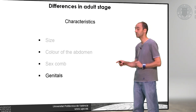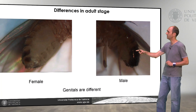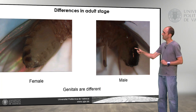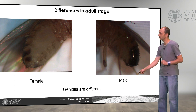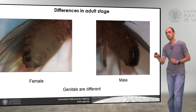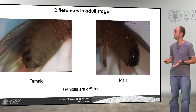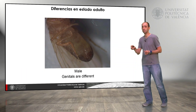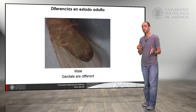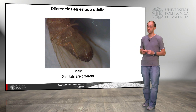The last difference is the genitals. If we look at the abdomen, here we can see a female and here a male. As we saw previously, the color is different, but focusing on the abdomen shape: the end of the abdomen is rounded in the male and pointed in the female. The female's abdomen is flat, while in the male it has a small opening, and inside that opening we have the penis. We can use that difference to identify a male or a female.